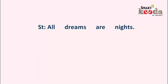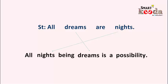Let's take another example. The statement is: all dreams are knights. Here, 'all' is the quantifier, 'dreams' is the class in the subject part, and 'knights' is the class in the predicate part. So, we take the class in the predicate part to the subject, put the quantifier 'all' before it, then take the class from the subject part to the predicate part and add the possibility phrase to the conclusion. And we get: all knights being dreams is a possibility. Wasn't it simple?